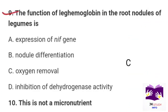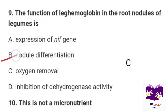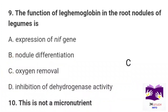Next question: The function of leghemoglobin in the root nodules of legumes is? Option A: expression of NIF gene. Option B: nodule differentiation. Option C: oxygen removal. Option D: inhibition of dehydrogenase activity. Correct option is Part C: oxygen removal.